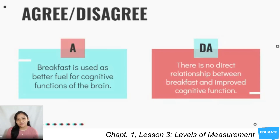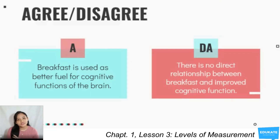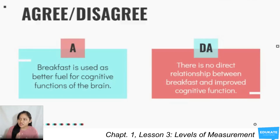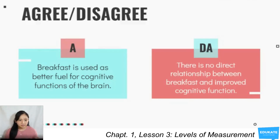Say that we have decided to apply statistics to the given statement above to see which side of the argument is statistically correct. If we are to answer this question, it should be considered first if it is answerable to a statistical process. Based on the statement, a question can be: does breakfast improve cognitive function? Or is there a direct relationship between breakfast and improved cognitive function?